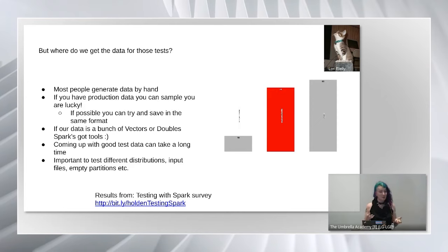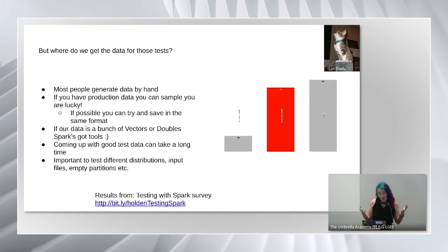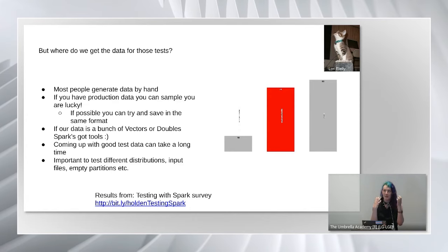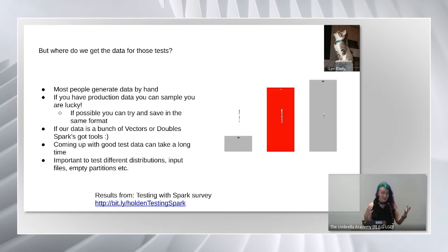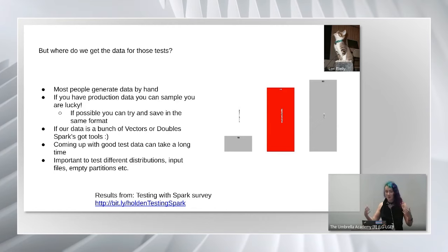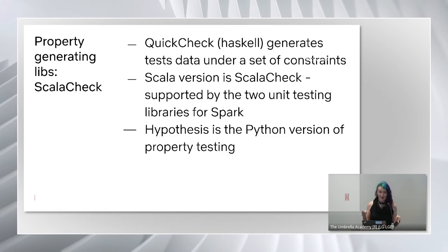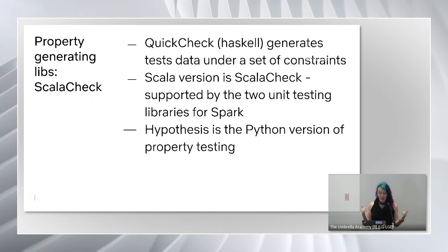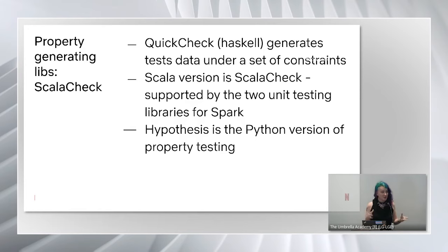From my survey, most people generate test data by hand — that does not scale. I cannot write the amount of data by hand that doesn't fit on one computer; my fingers don't move that fast. If you're lucky, you may have production data you can sample. That's often the best case scenario because it's like what you're actually working with. But the downside is it only gives you the kind of data you've already seen — it doesn't give you new kinds. As your schema evolves, those old sampled records won't keep up.